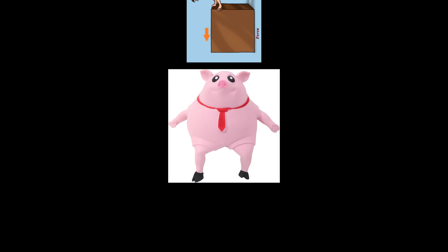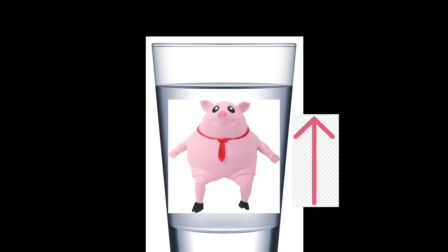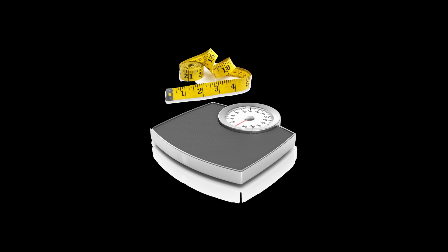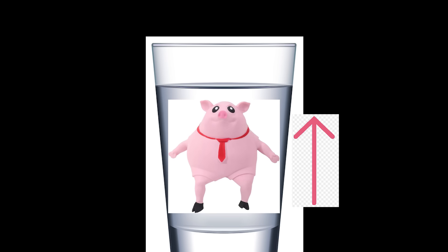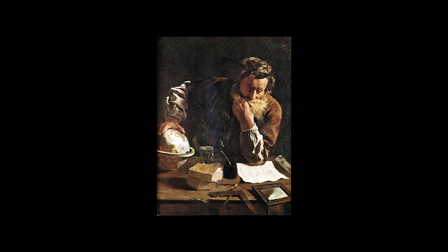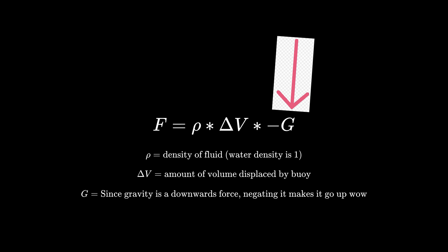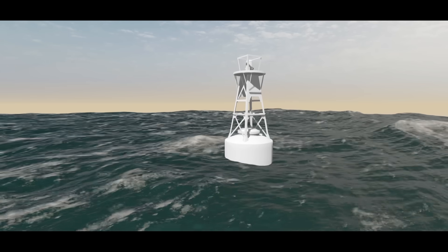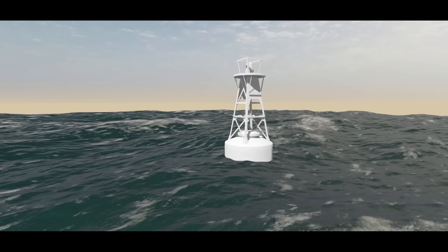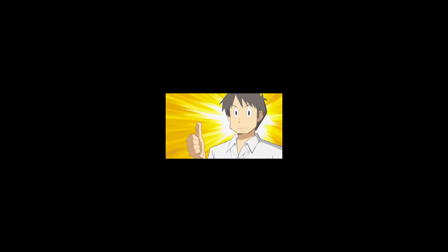Time for a little physics review. Objects have gravity applied to them — this pushes them downwards. When an object is pushed downwards into a fluid, it experiences an opposite force equal to the weight of the fluid being displaced. If this force is greater than the downward force, then the object will float. Archimedes defined the upwards force as equal to the density of the fluid times the volume of displaced fluid times negative gravity. Now that we have the height of our water reading back from the GPU every few frames, we can calculate the amount of fluid being displaced by our buoy and update our forces accordingly.